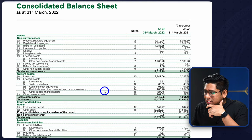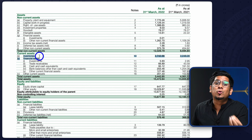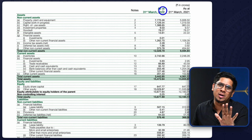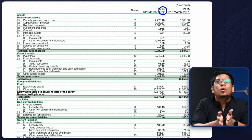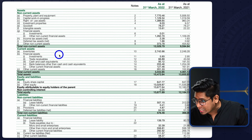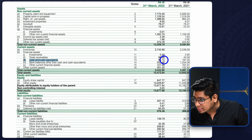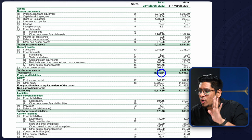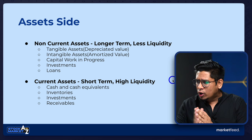Looking at DMART's current assets: being a supermarket chain, they have huge inventories — 2,742 crore rupees of inventories as of 31st March 2022. Balance sheet is made on a specific date, so on a different day the numbers can be hugely different. They also have a lot of financial assets as part of current assets. Cash and cash equivalents is nearly 95 crores. Total current assets comes up to 3,442 crores, and total assets — the sum of non-current and current assets — is 15,472 crores.